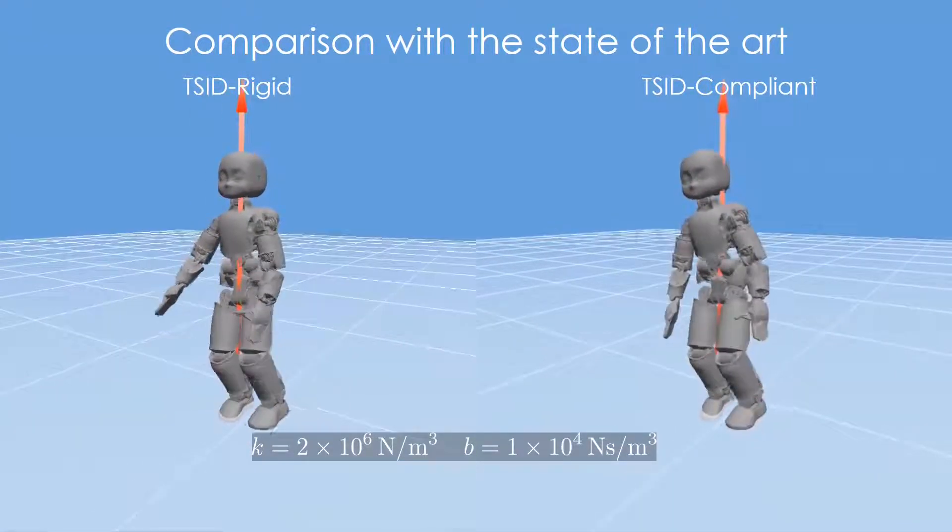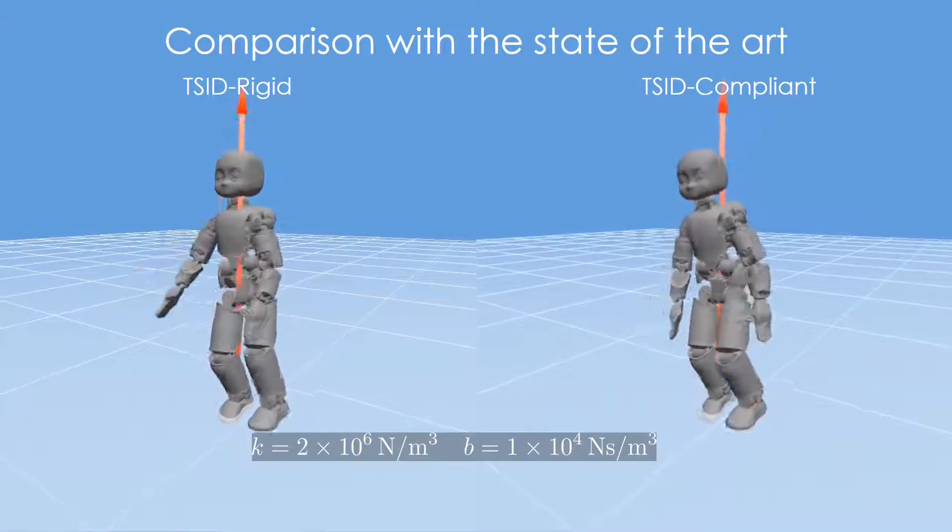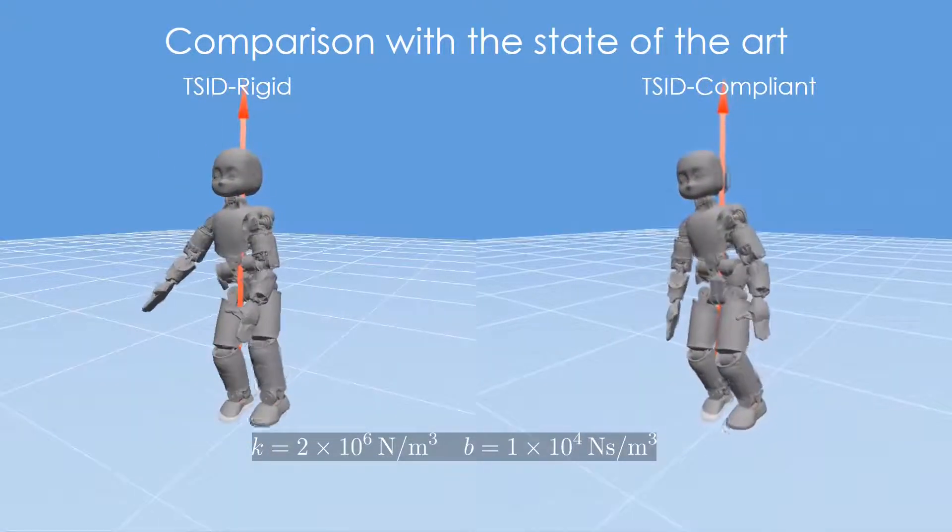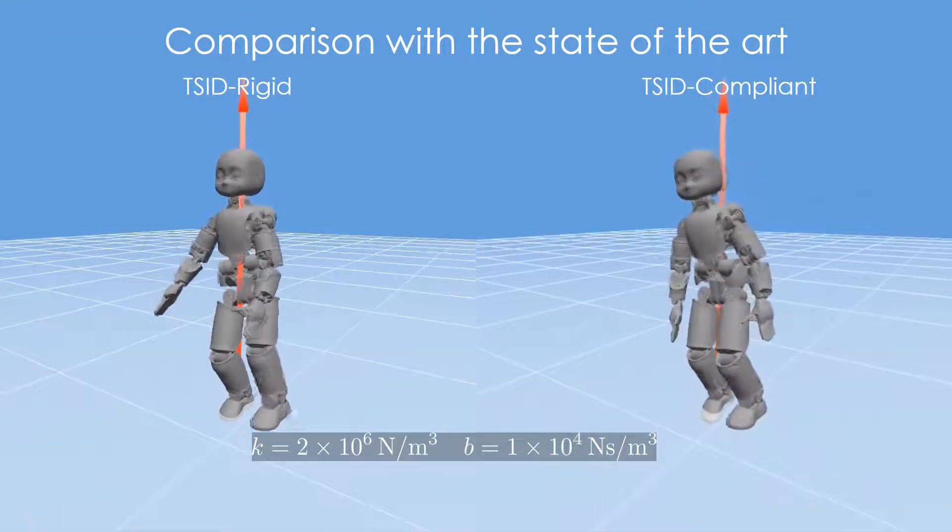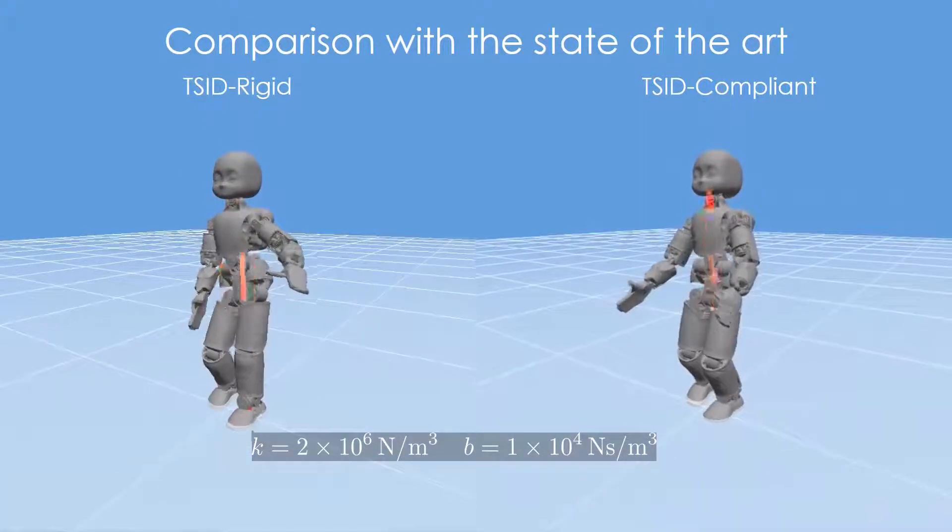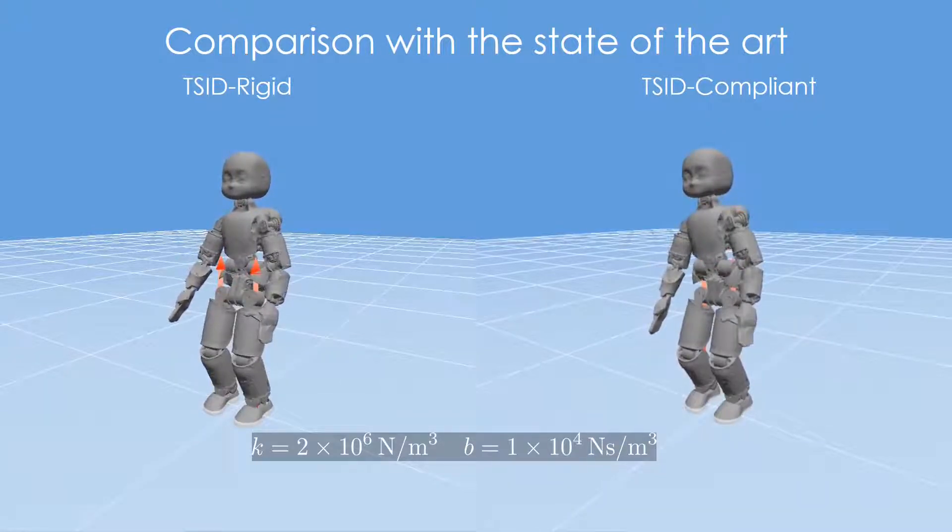We compare the performances of the proposed controller, here called TSID-Compliant, and the state-of-the-art controller, called TSID-Rigid, in the case of different contact parameters. Both controllers seem to show good tracking performances. The TSID-Rigid introduces faster variation on the measured contact wrenches. This contributes to overall higher vibrations on the robot. One reason for this behavior is that the TSID-Rigid assumes full control of the desired contact wrenches. This assumption is in general valid in the case of stiff contacts, but it doesn't hold if the environment is compliant.